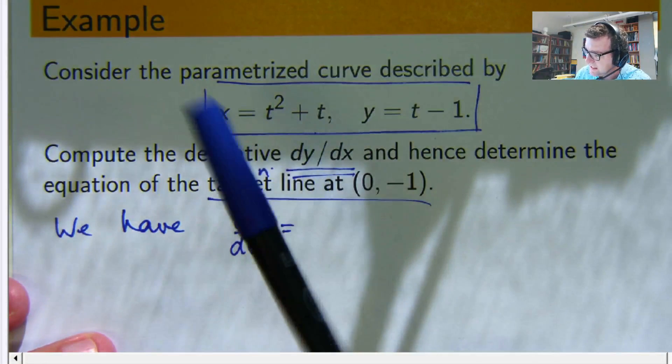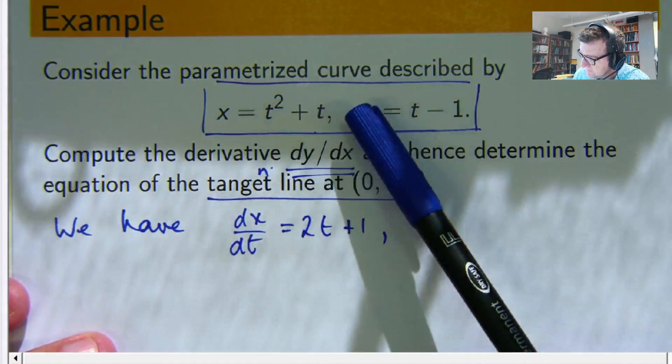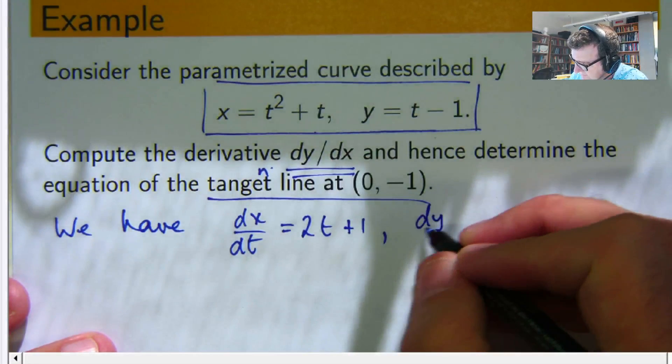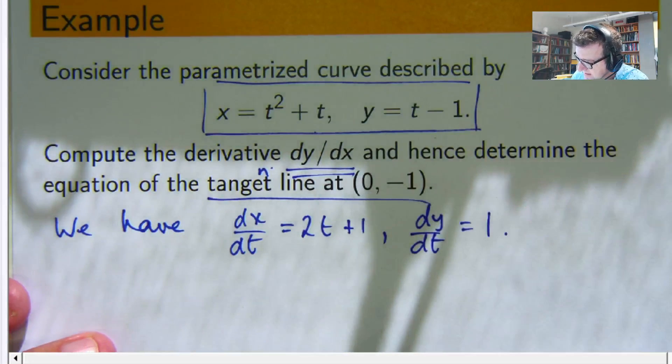So t squared will become 2t, t will become 1. If I compute the derivatives of this, then I will get 1 and 0 there.